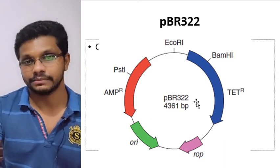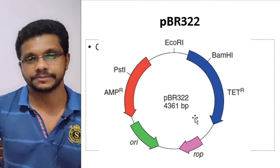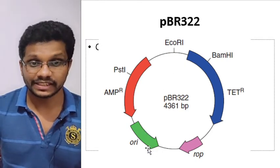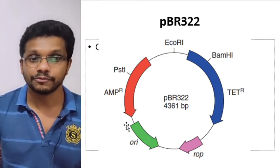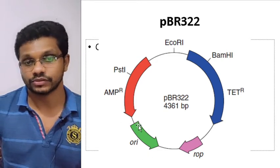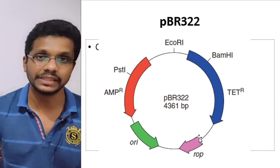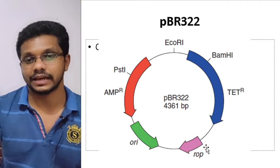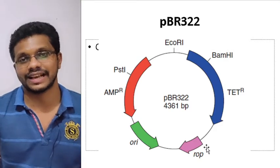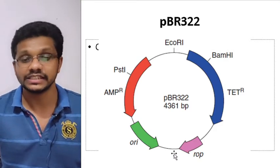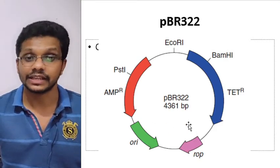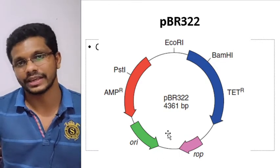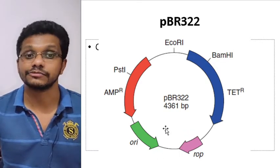We write the name in the middle of the vector. Then, origin of replication and ROP. PBR322 got its origin of replication and ROP region, which actually controls the origin of replication, from the ColE1 plasmid. So it is a ColE1-derived vector.